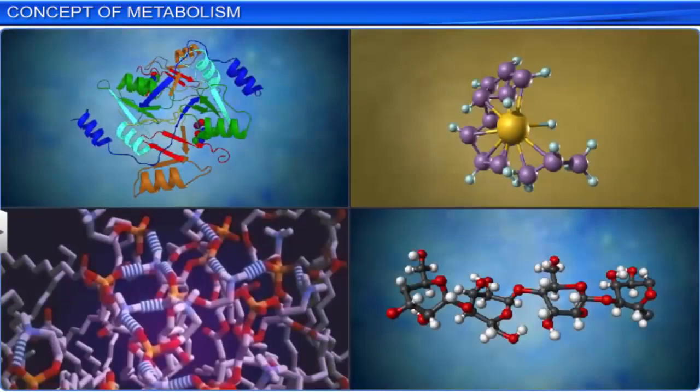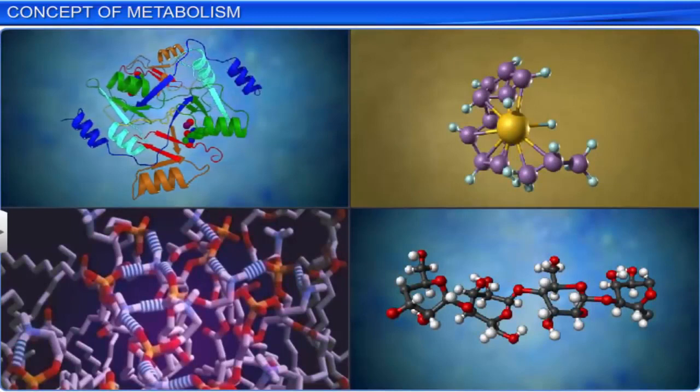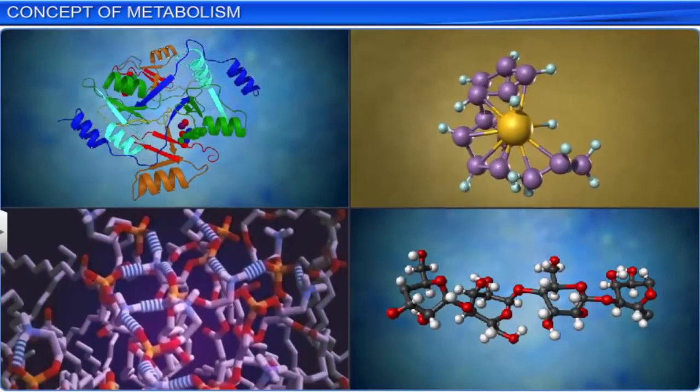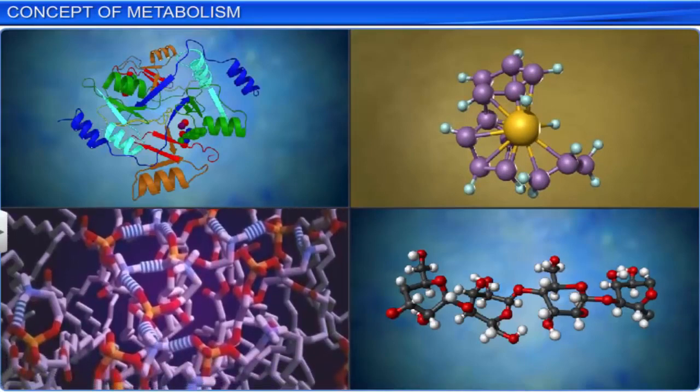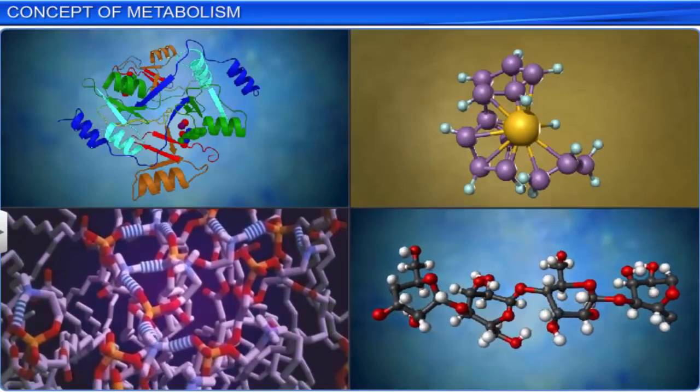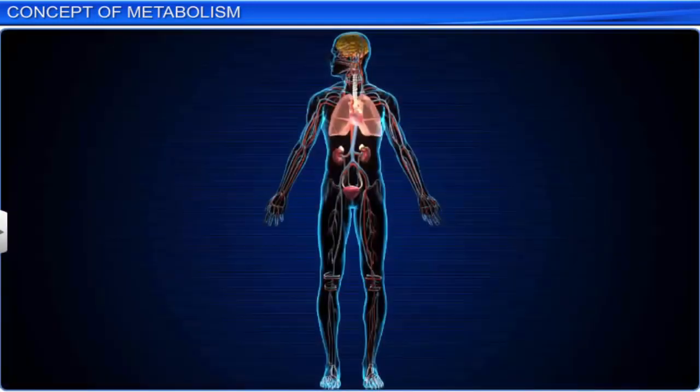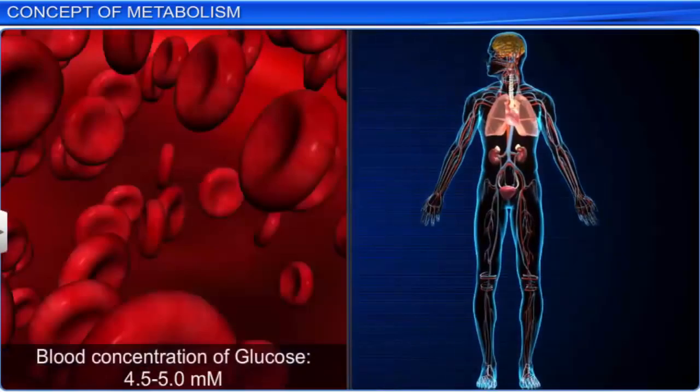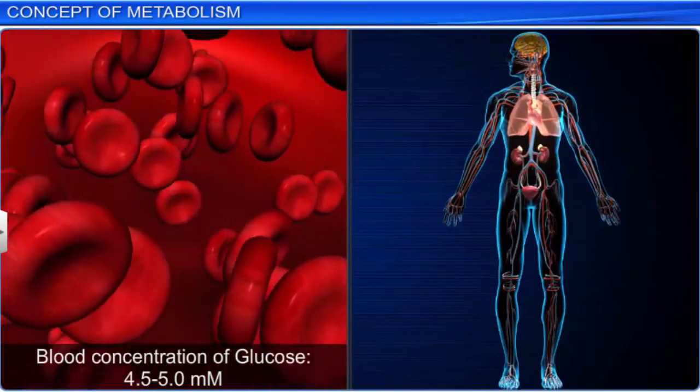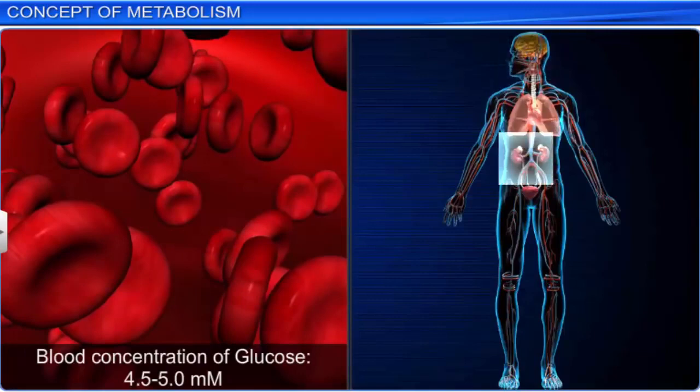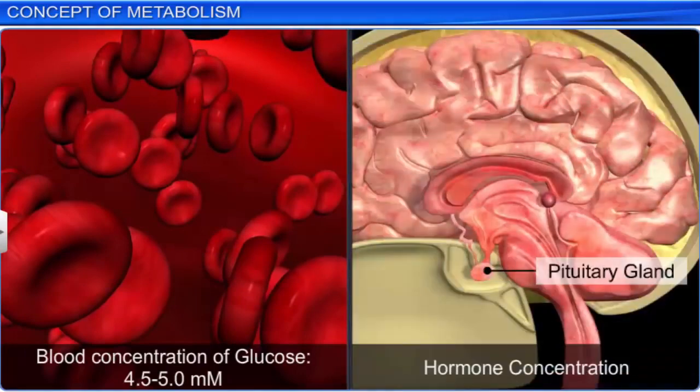This flow of metabolites is also called the dynamic state of body constituents. As you have studied, thousands of metabolites or biomolecules are present in living organisms. Each of these biomolecules has a definite concentration. For example, the blood concentration of glucose in a normal healthy individual is 4.5 to 5.0 millimolars, while that of hormones is measured in nanograms and milliliters.